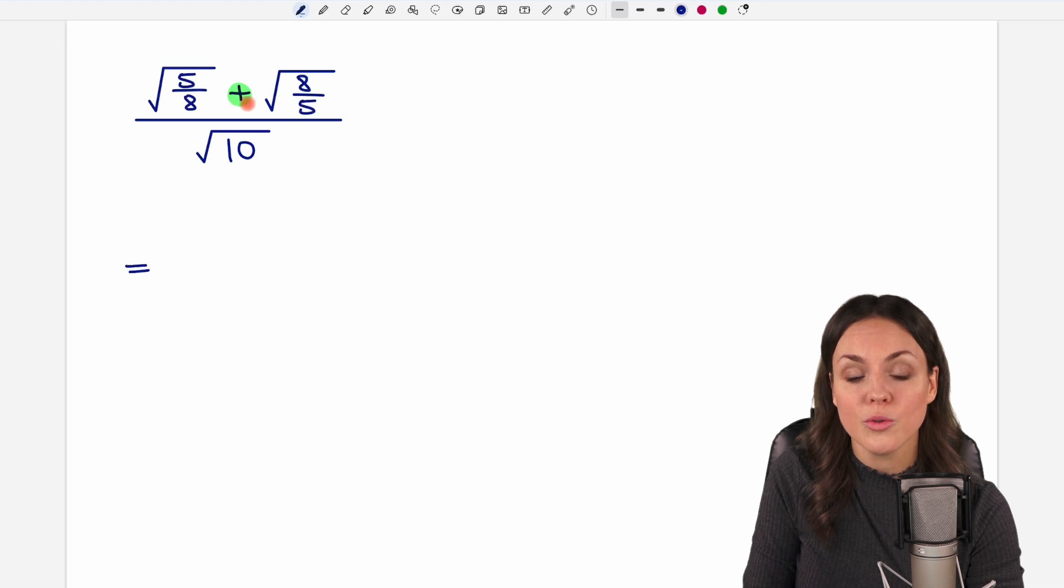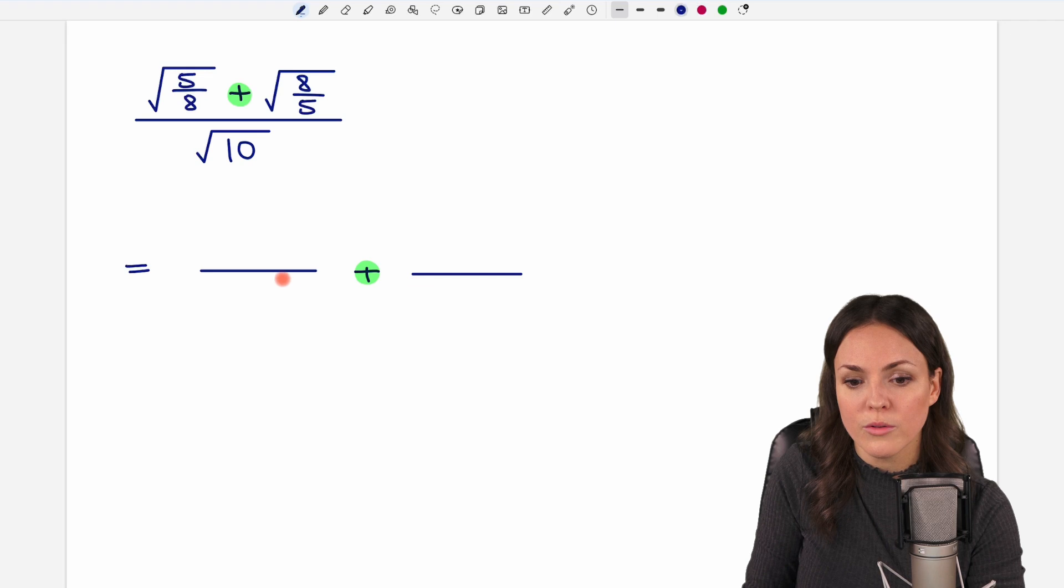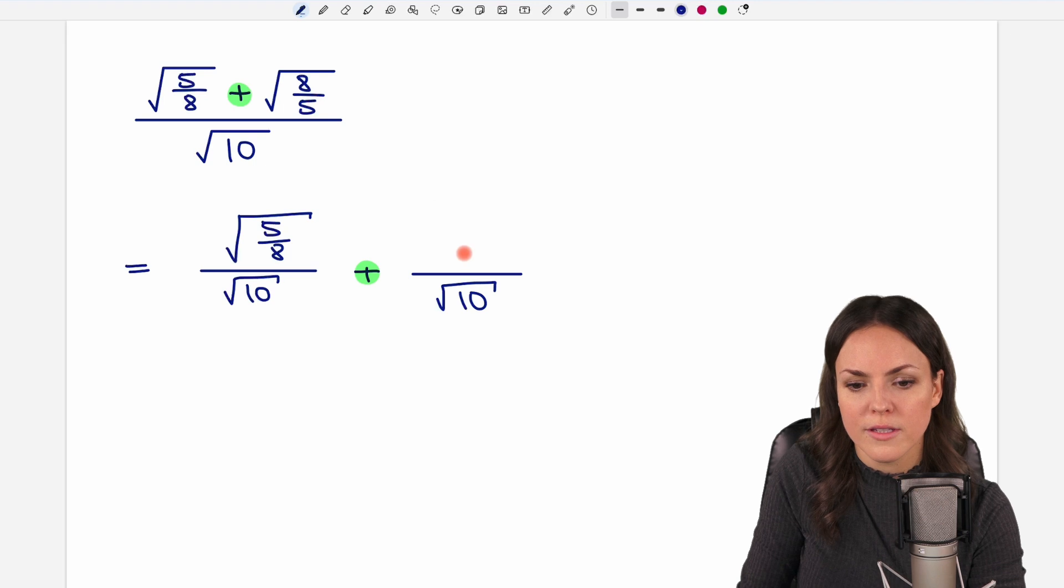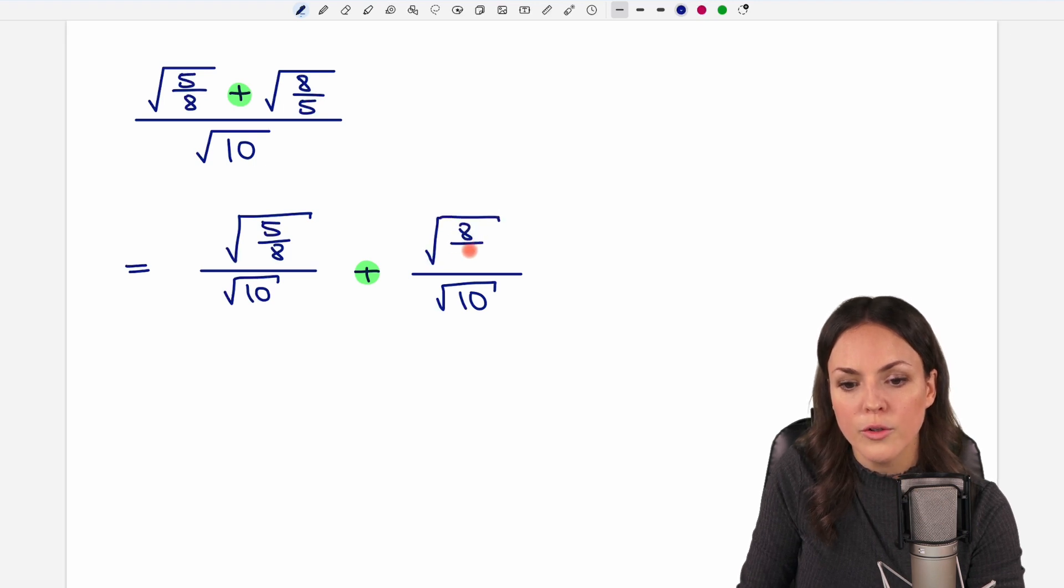But we can use the sum we have here in the numerator because instead of this one big fraction we can write it as two single smaller fractions that are connected with this plus. The denominator stays the same in both these fractions so the square root of 10 is my denominator here and here as well. The numerator will be the first part of the sum, the square root of 5 over 8, and this numerator will be the second part of the sum, the square root of 8 over 5.